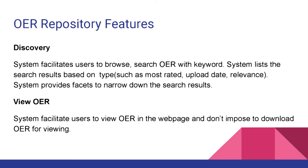In discovery, you will have browse and search. Also, you will have faceted search. Faceted search means — like on e-commerce portals where you search for a product and the system displays many results — to narrow down search results, you apply different filters like price range, rating, popularity, relevance, etc. We will have similar filters here.